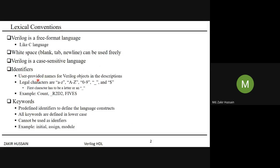For identifiers, the legal characters are: all lowercase alphabets, all uppercase alphabets, numerical values 0–9, underscore, and dollar. The first character can be an underscore, but no other special character is allowed as the first character. Dollar cannot come first. Underscore as the first character is allowed in Verilog.